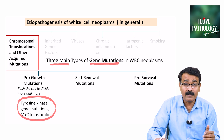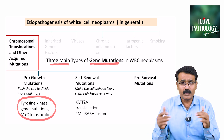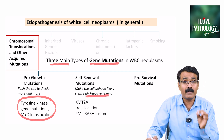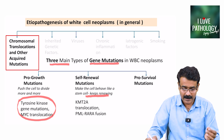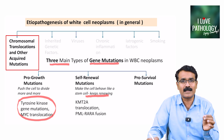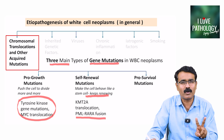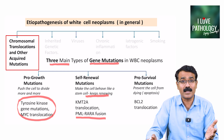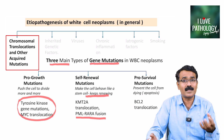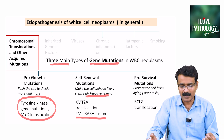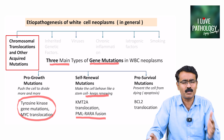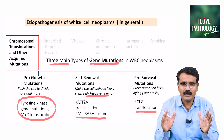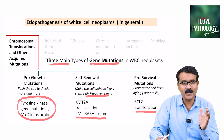Self-renewal mutations make the cell behave like a stem cell, causing it to keep renewing. Examples are KMT2A translocation and PML-RARA fusion. The third category, pro-survival mutations, prevents the cell from dying by means of apoptosis. The example is BCL2 translocation. So the three kinds of mutations are: pro-growth, self-renewal, and pro-survival.